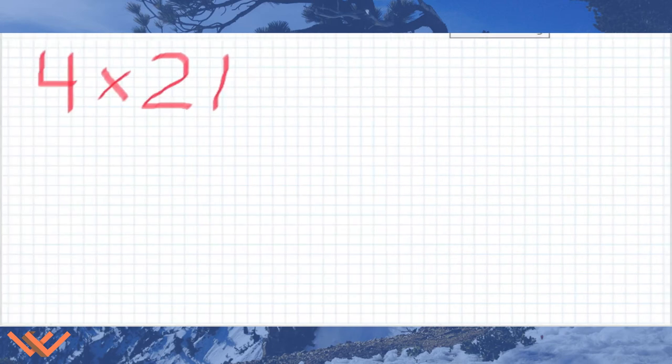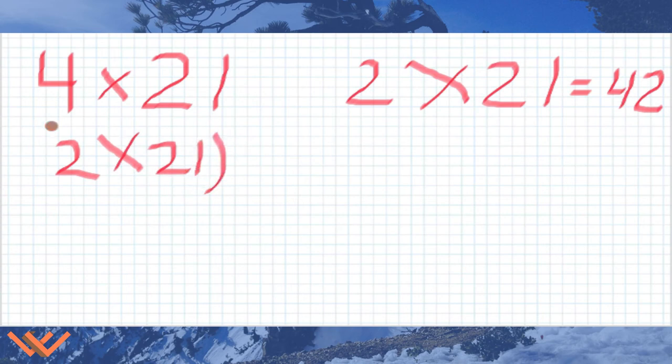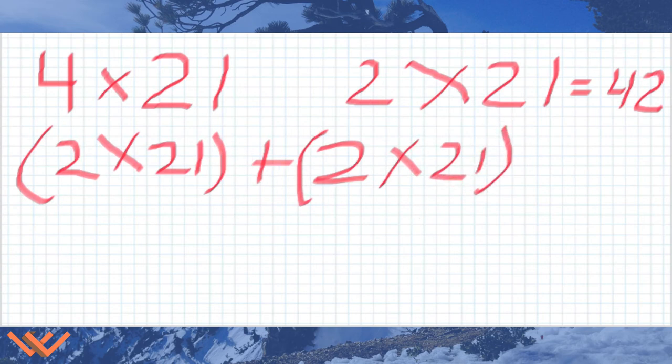Next up, 4 times 21. Well, we just did 2 times 21, and we know that 2 times 21, so I'm going to put that over here. I'm going to say 2 times 21 is equal to, that's going to be 42. See how that is? We just have a, it's like, wait a minute. 2 plus 2, so that could be 2 times 21. Okay. I'm going to put that in brackets. Plus 2 times 21. You know what 2 times 21 is, because we just went over that. There's 42.